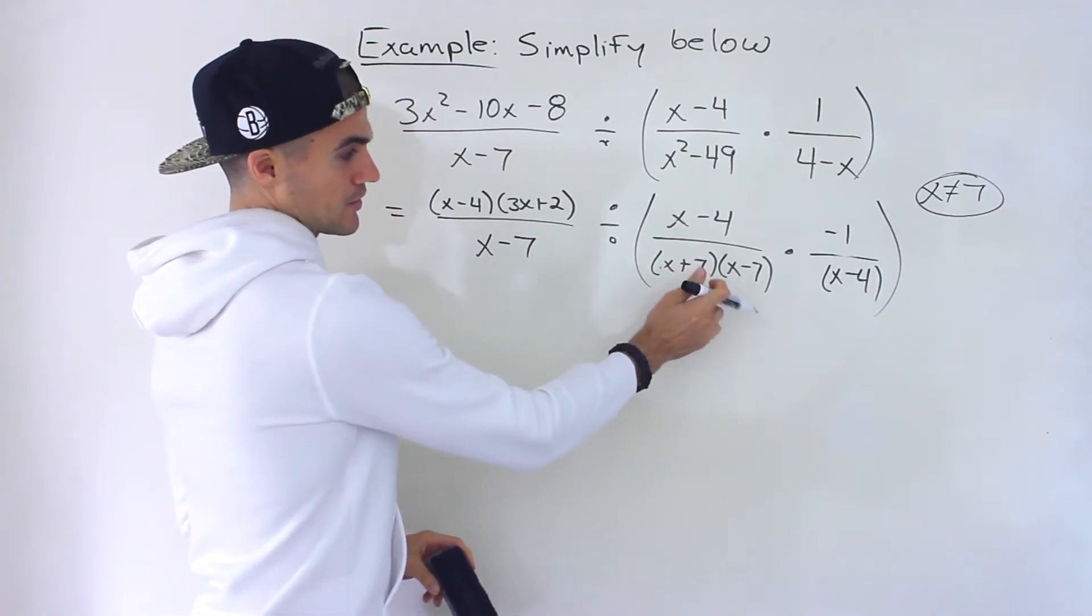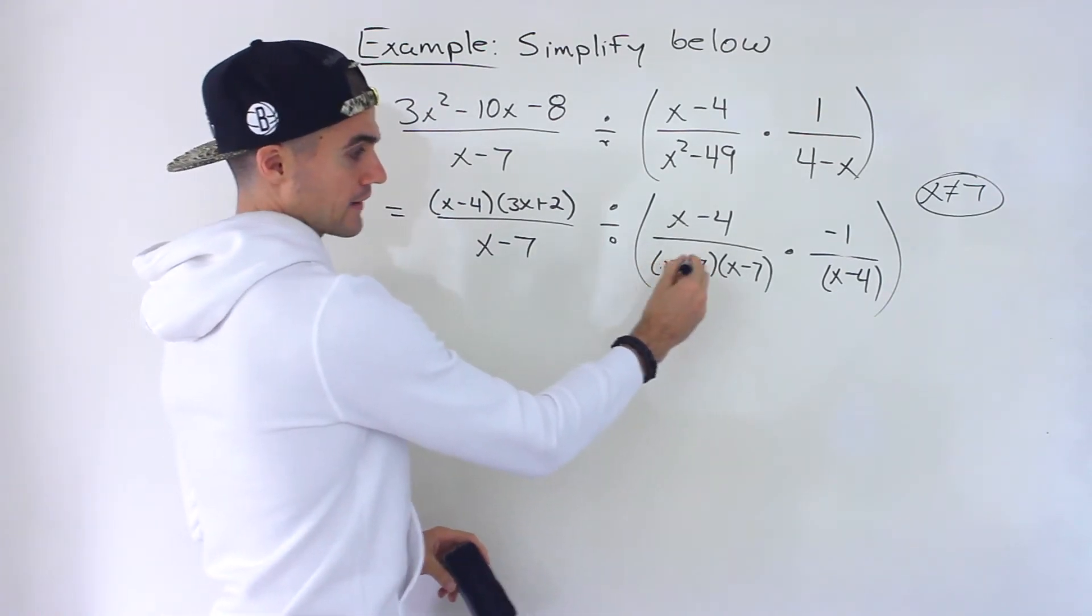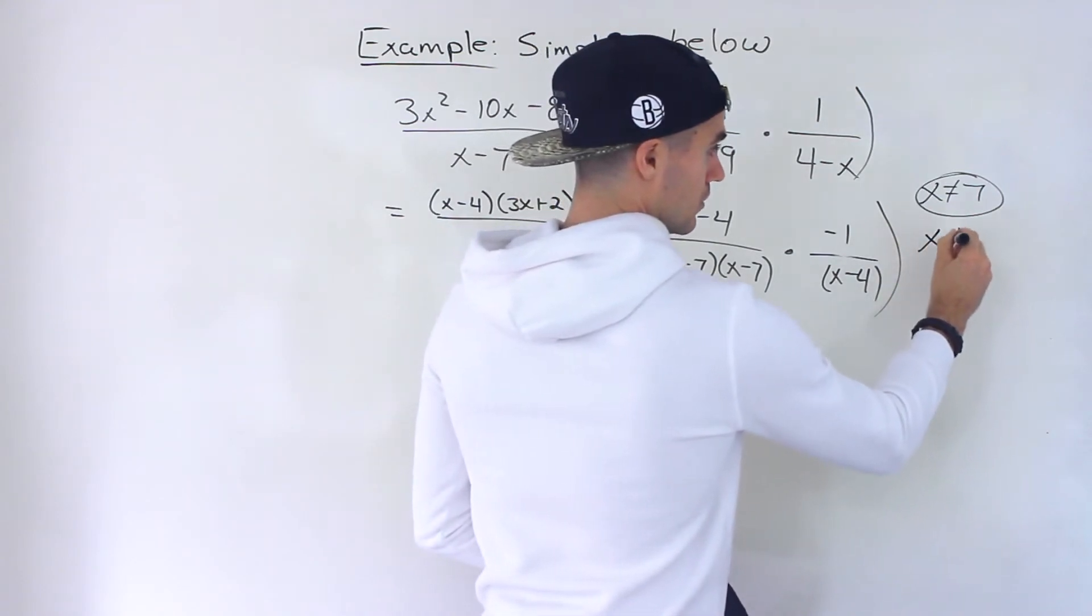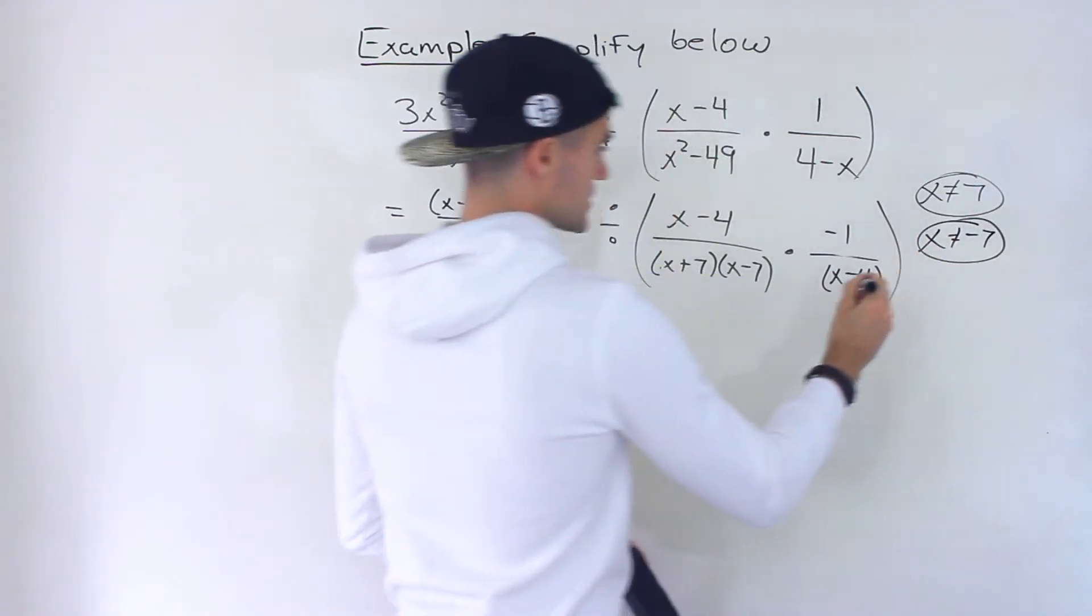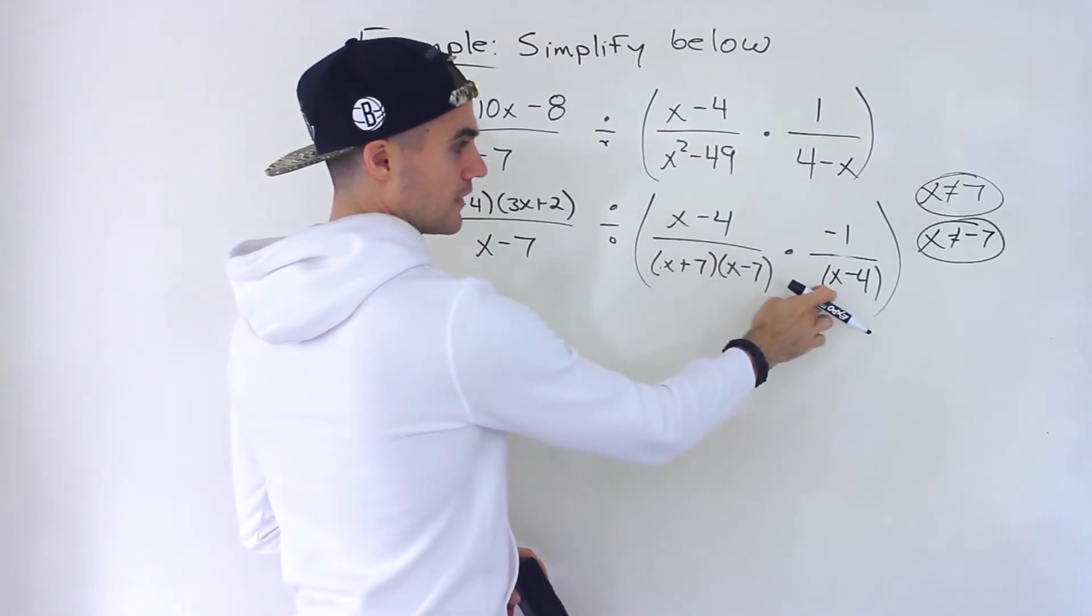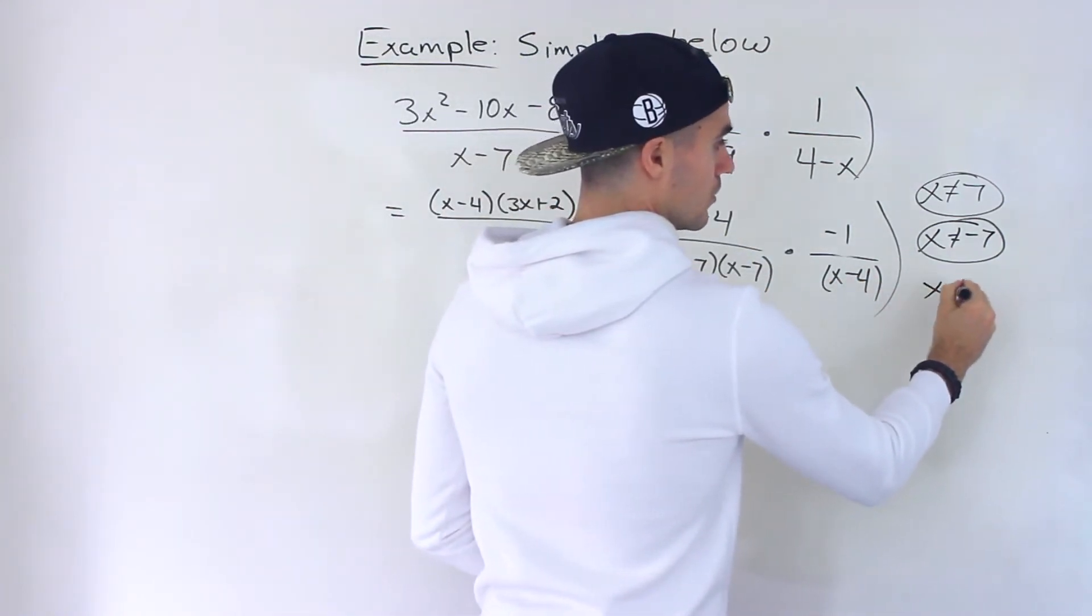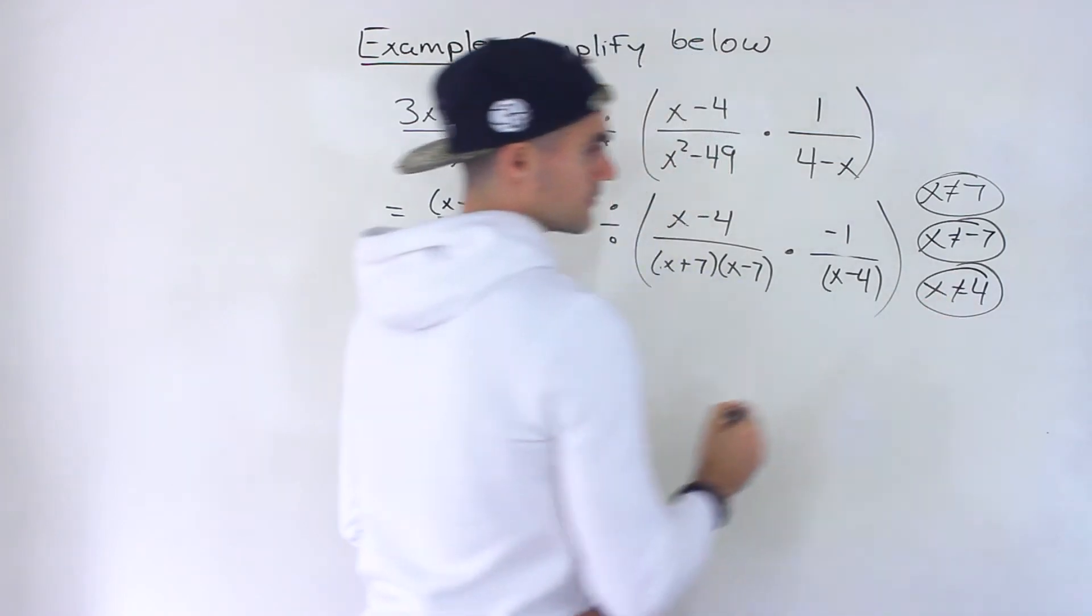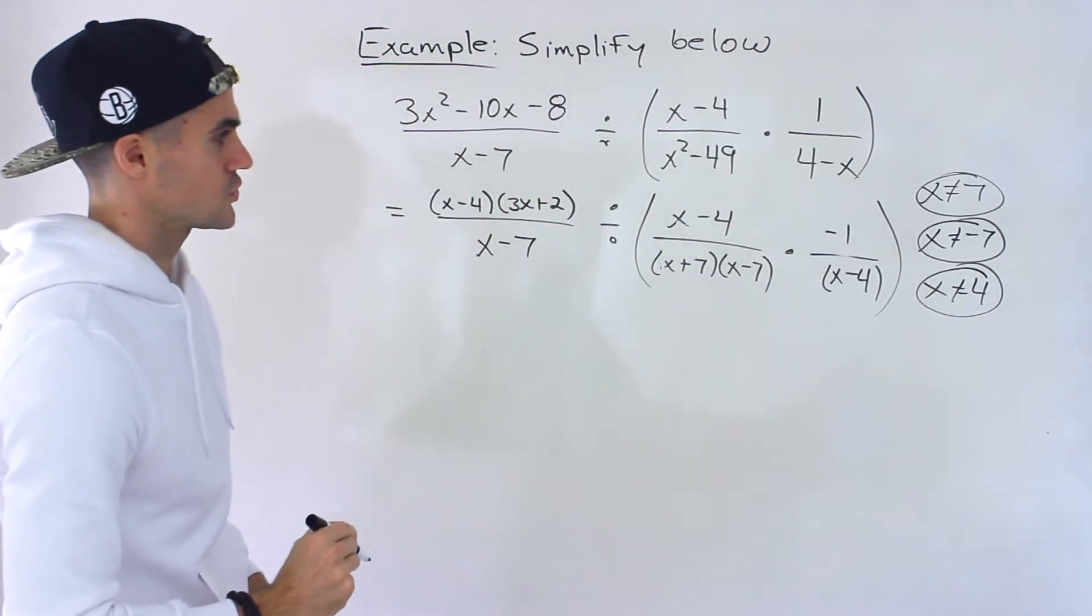And then moving on to this denominator notice that with this bracket x cannot equal negative 7. Here we already have x cannot equal 7. And then over here x cannot equal positive 4. Like that. So those are the restrictions.